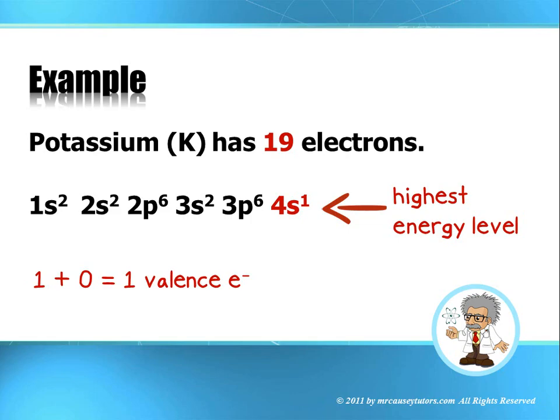Now this is key to knowing how many valence electrons there are in an element. Because it's the valence electrons that bond. It's the valence electrons that are usually involved in chemical reactions and things of that nature. So we want to know our valence electrons.